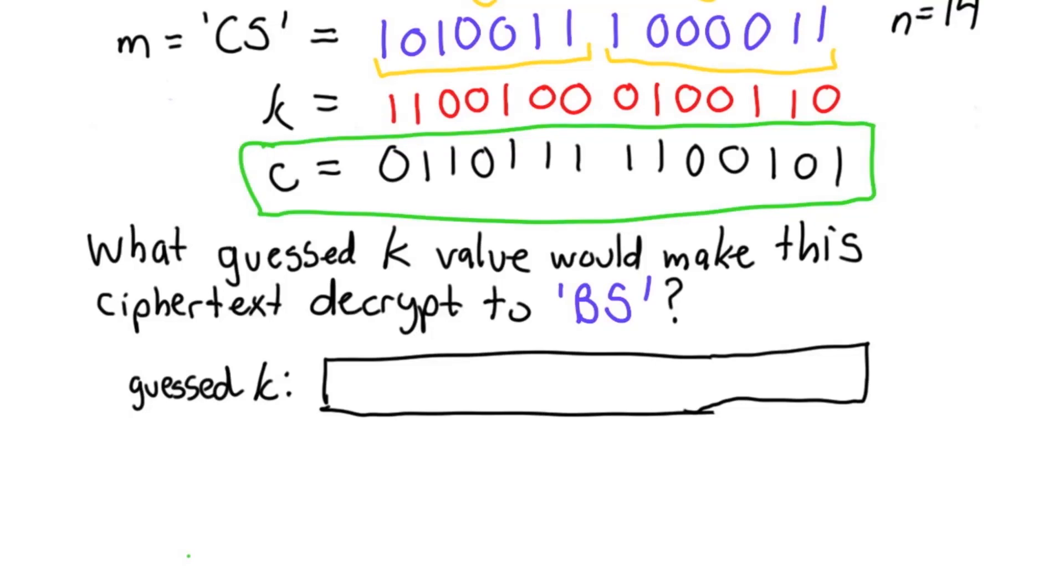The key point to notice here, and this is why the one-time pad provides perfect secrecy, is that for any given ciphertext, we can produce any message we want by picking different keys. That means that if we just have the ciphertext, we haven't learned anything at all about the message.